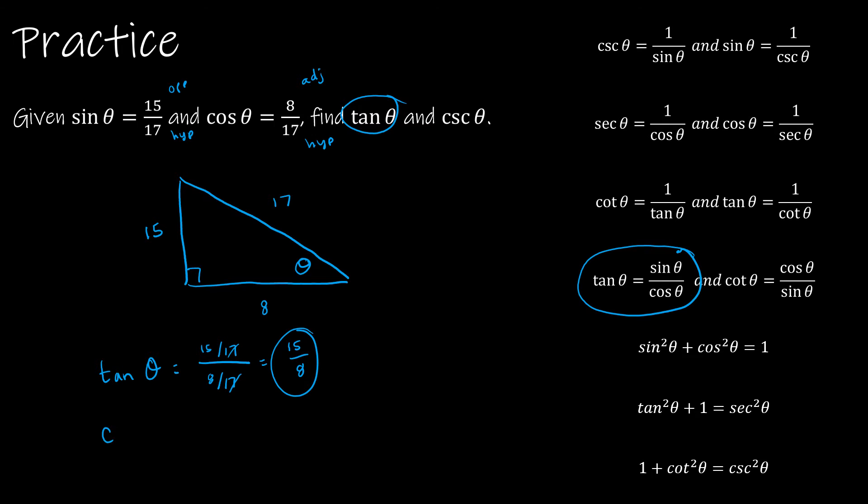What is cosecant of theta? Cosecant of theta, if you'll recall, is the inverse of sine. And so sine is 15 over 17, so it's essentially like 1 over 15 divided by 17, which is the same as 17 over 15. So those are my two solutions.